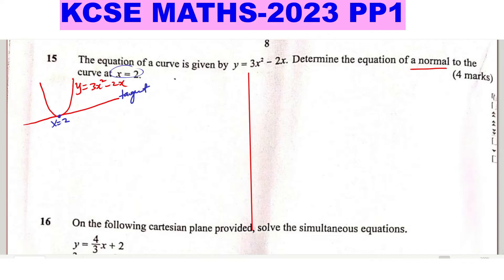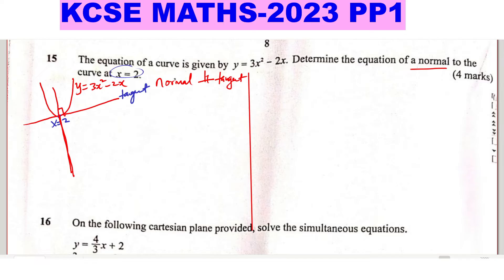It is important to note that the normal is perpendicular to the tangent, or the tangent is perpendicular to the normal — it is just the same thing. The normal is a line that will pass through that point, perpendicular to the tangent. Both of them pass through this point at x equals 2, so the first thing we need to find is this point.